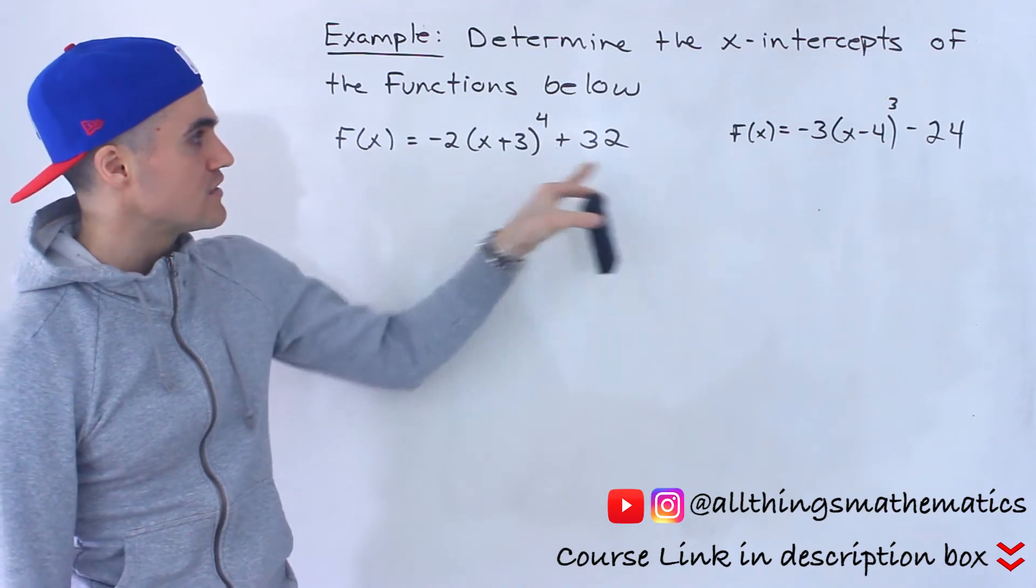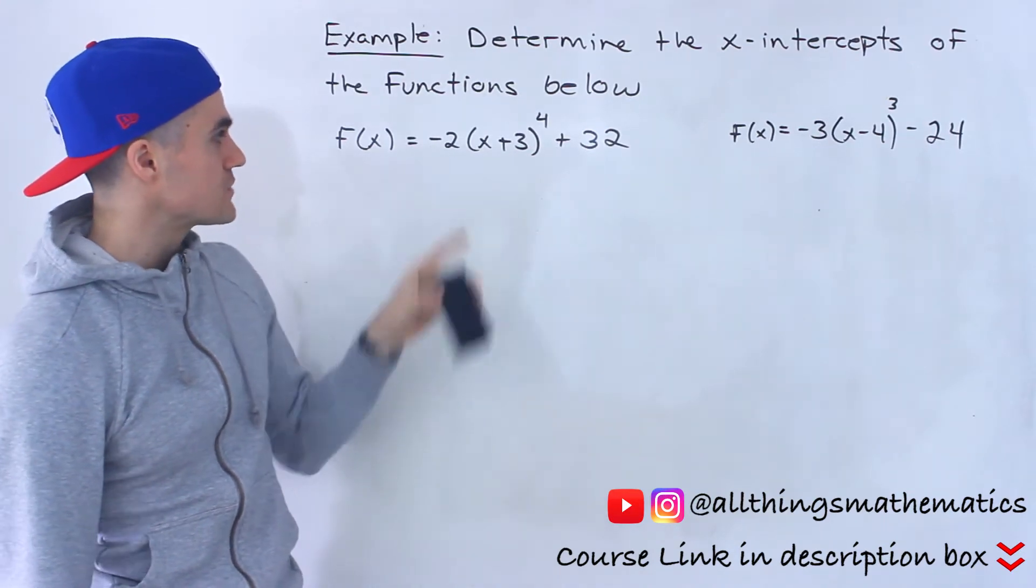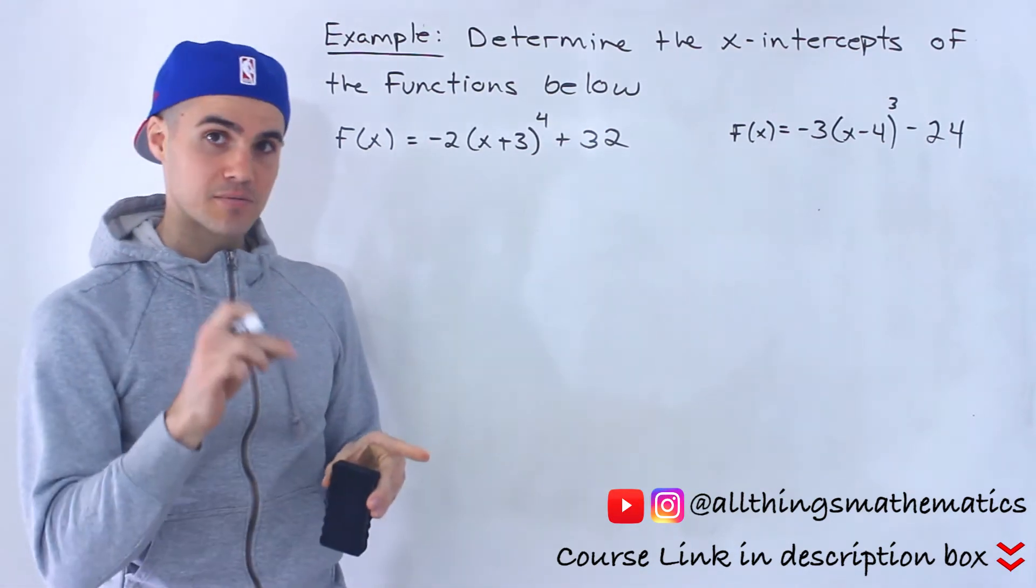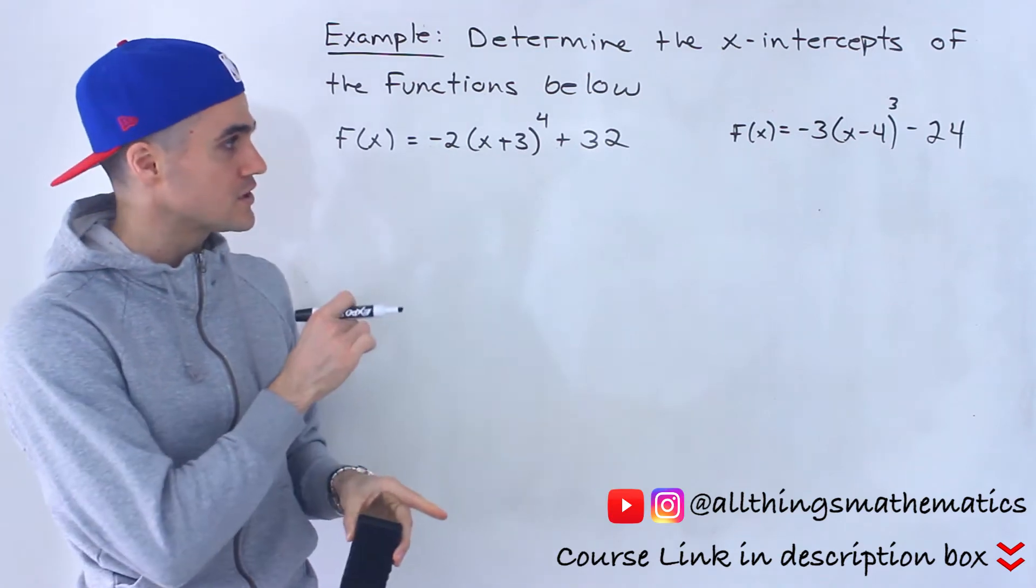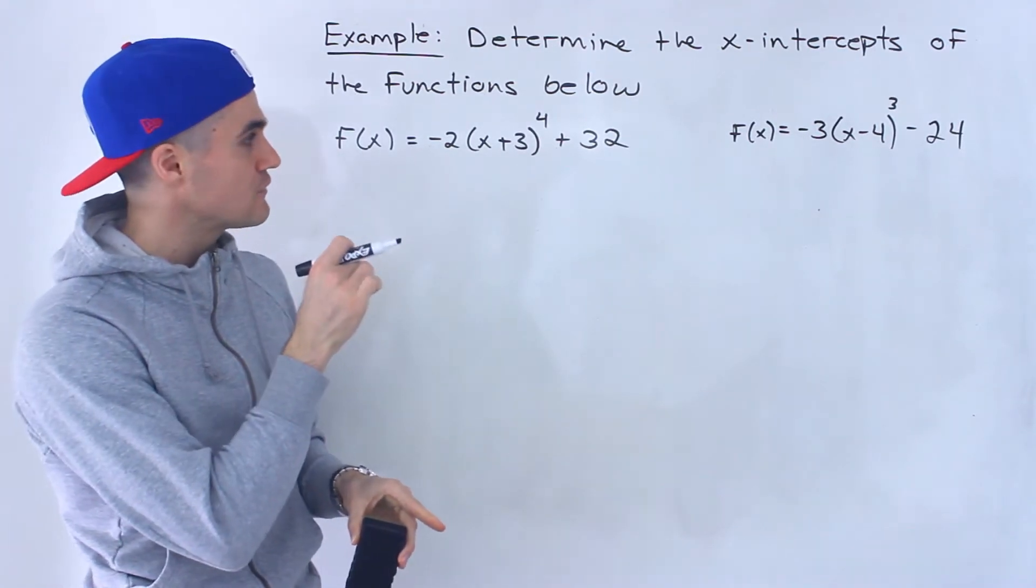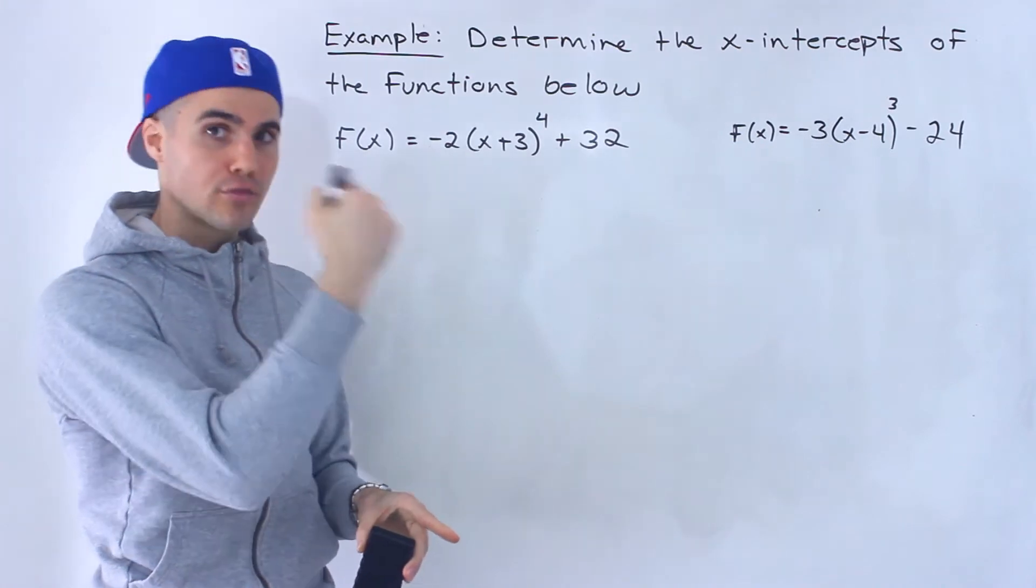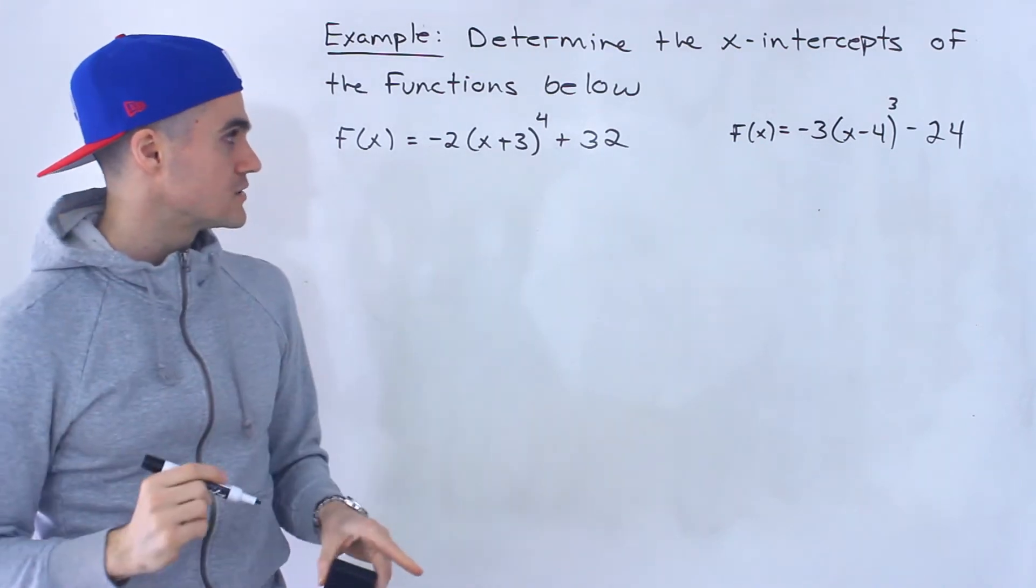We have to find the x-intercepts of these two functions here. So we've got f(x) = -2(x+3)^4 + 32 and f(x) = -3(x-4)^3 - 24.